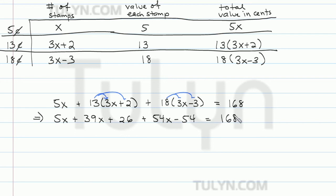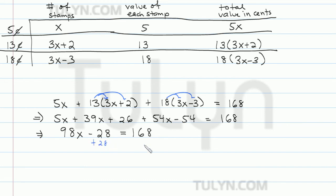We get 5x plus 39x plus 26 plus 54x minus 54 equals 168. Combining like terms, we have 5x plus 39x plus 54x, which gives us 98x, and 26 minus 54 gives us minus 28. So 98x minus 28 equals 168. Solving for x, we add 28 to each side to get 98x equals 196, and dividing both sides by 98, we get x equals 2.